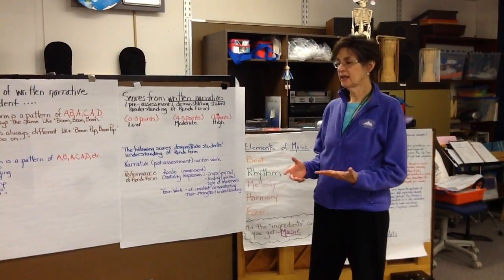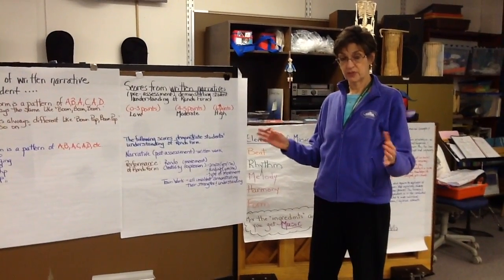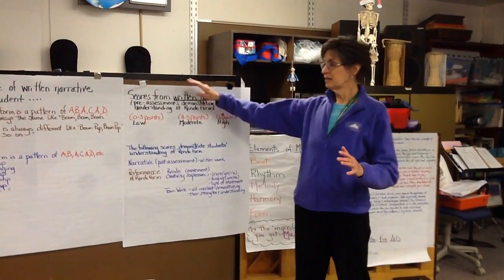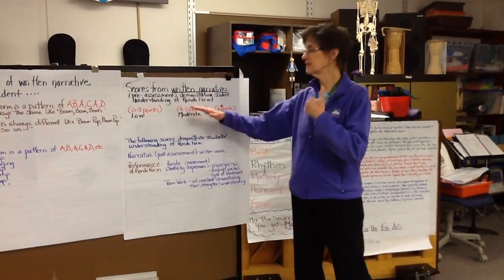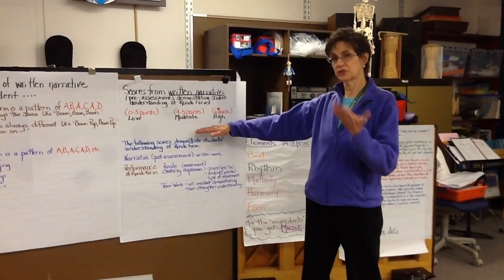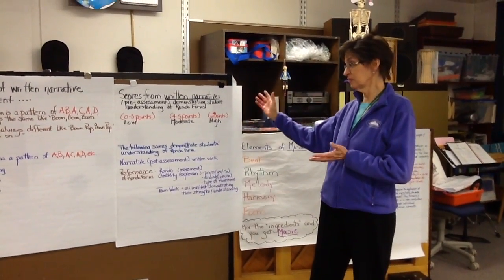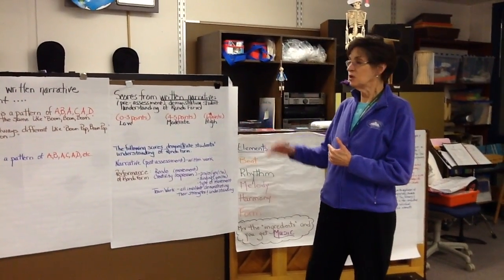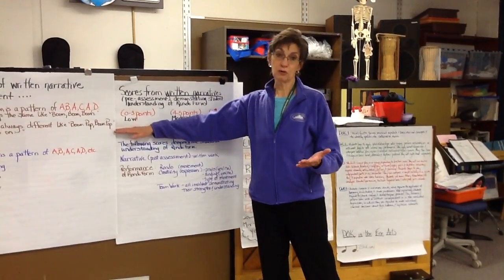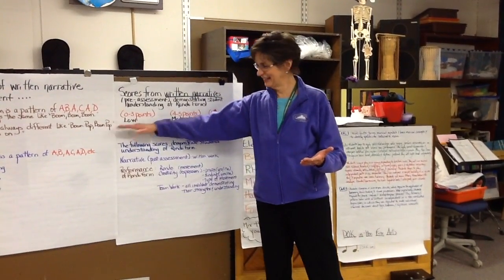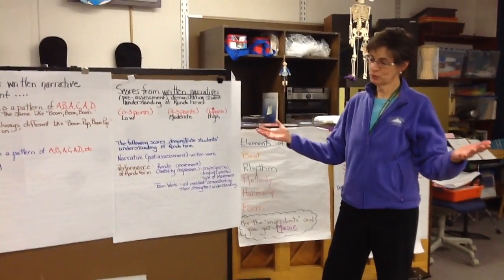To get a baseline, I had students write down what they thought rondo was in narrative form, and I assigned points. Low understanding was zero to three points, moderate understanding was four to five, and high understanding was six and above. Most students, to be honest, had no idea, so they were right at the low end. My intent was that they would grow through what we were doing.